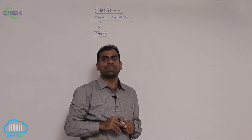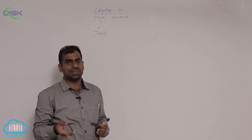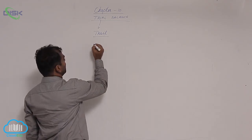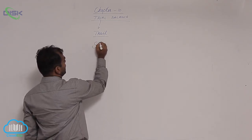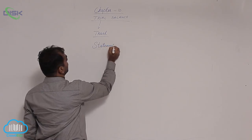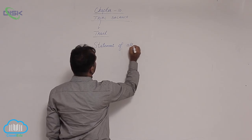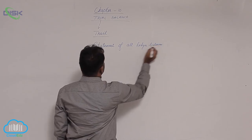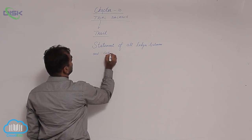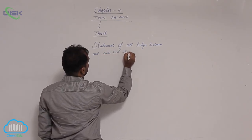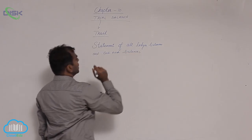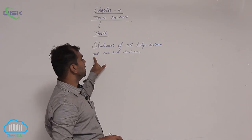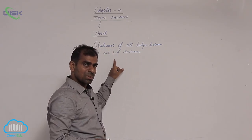What is a trial? A trial is something where when you execute, you may get a positive or a negative outcome. Trial balance means, by definition, it is a statement of all ledger balances and cash book balances, because the cash book is also a ledger.